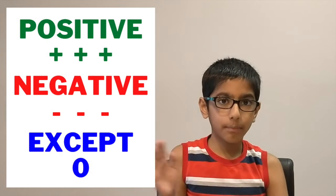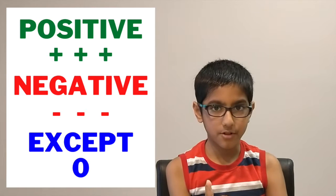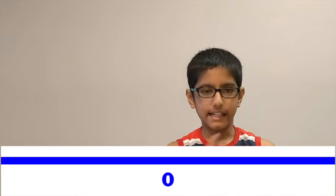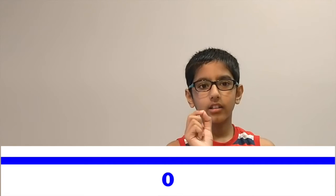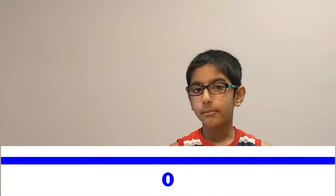All numbers — every single number in the world — is either a positive or a negative number, with one exception: zero. Positive numbers are numbers that are greater than zero. Negative numbers are numbers that are less than zero. Let me just draw a line and mark the center of the line as zero.